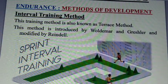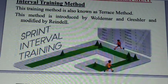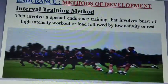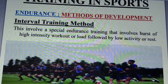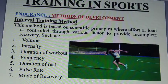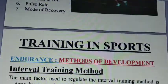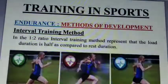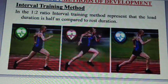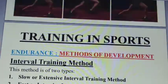The interval training method is known as the Tarras method, introduced by Waldmar and Groschler, and modified by Randall. The principle of interval training involves bursts of high-intensity workout load followed by low activity as rest. The pattern is: rest, workout, rest, workout, rest, workout. In interval training, there is a 1-to-2 ratio — meaning the load duration is half compared to rest. So if the workout is 1 minute, the rest is 2 minutes.